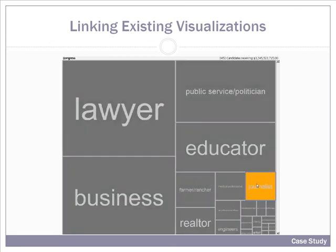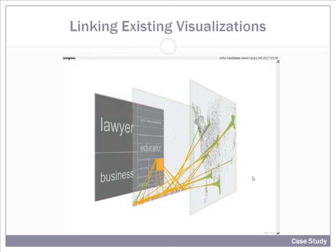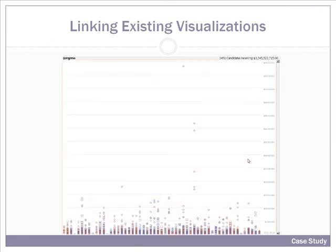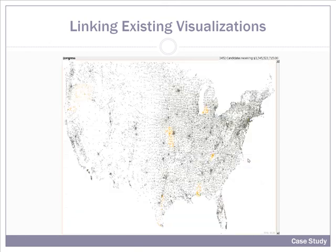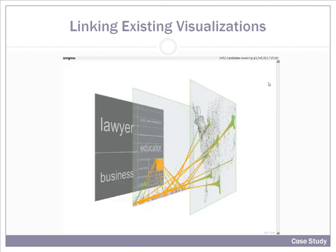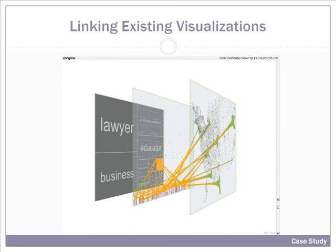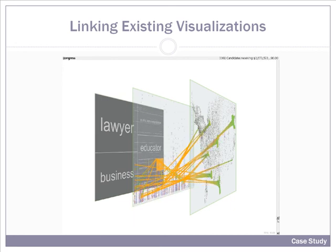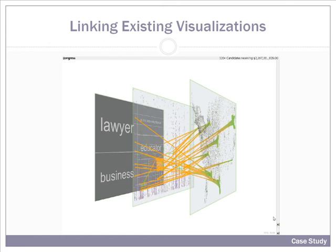If we select the journalist node, we will see edges propagate across from journalists to their fundraising success and to the locations in the United States where journalists were elected. We can see that journalists were not particularly successful fundraisers. We can change the range of the center graph to expand the area in which journalists were successfully fundraising and find where exactly the most successful fundraising journalist was elected.